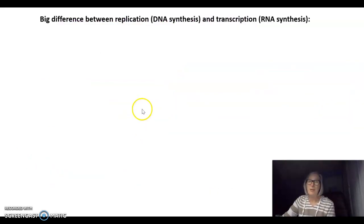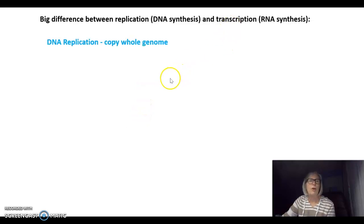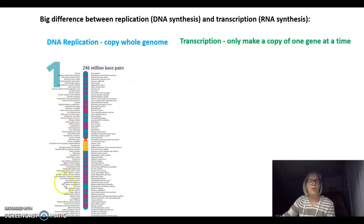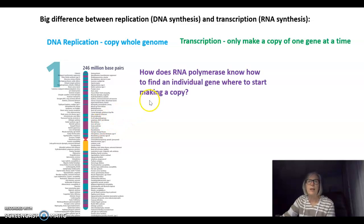There's a big difference between replication, or DNA synthesis, and transcription, or RNA synthesis. In DNA replication, the cell copied the entire genome. With transcription, the cell only makes a copy of one gene at a time. If we look at all the genes on a chromosome, you can see that this could be really hard for an RNA polymerase to find the correct gene to start if it's only doing one gene at a time.